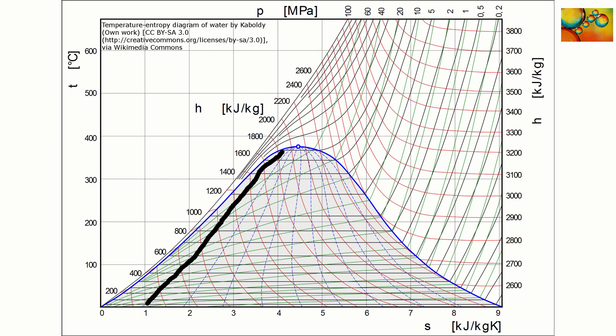Inside the two-phase region, this diagram shows lines of constant quality. Quality is the ratio of the mass in the vapor phase to the total mass of the system. Close to the saturated liquid line, the quality will be small because there is little vapor in the system.